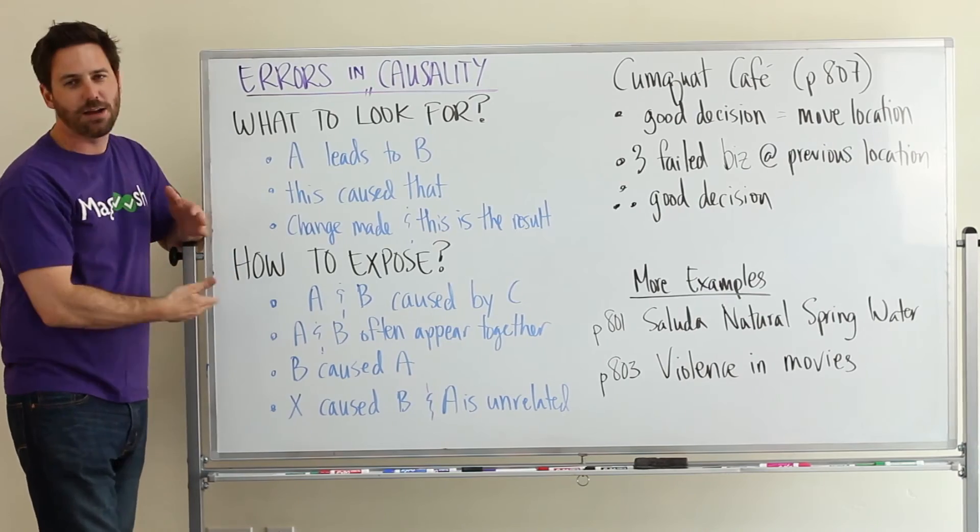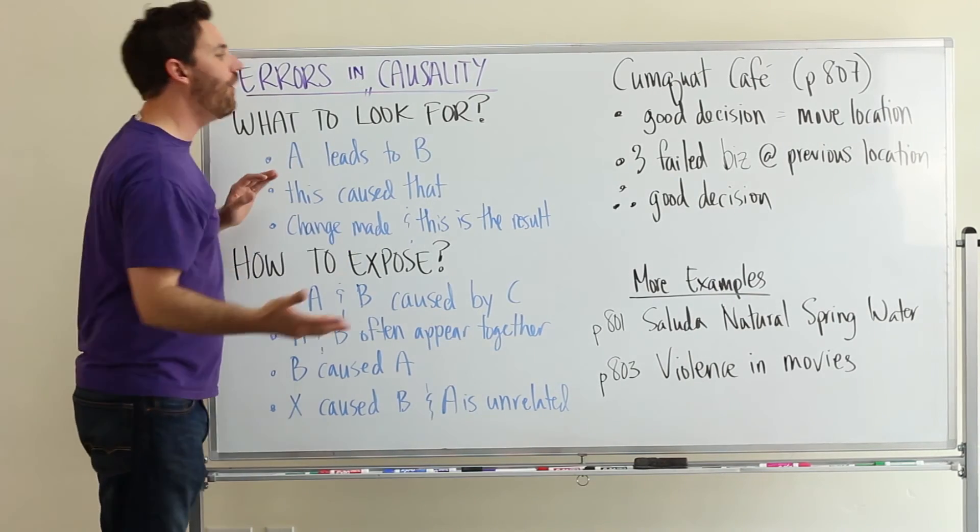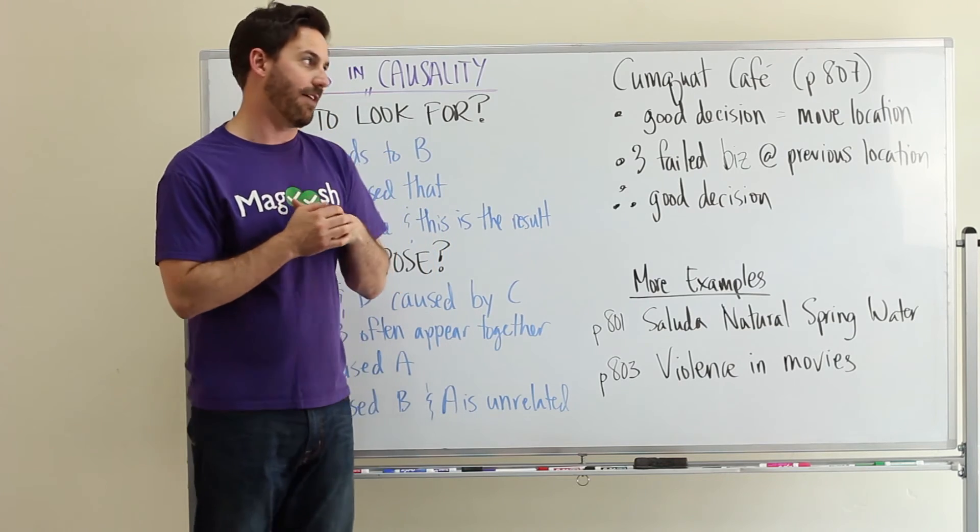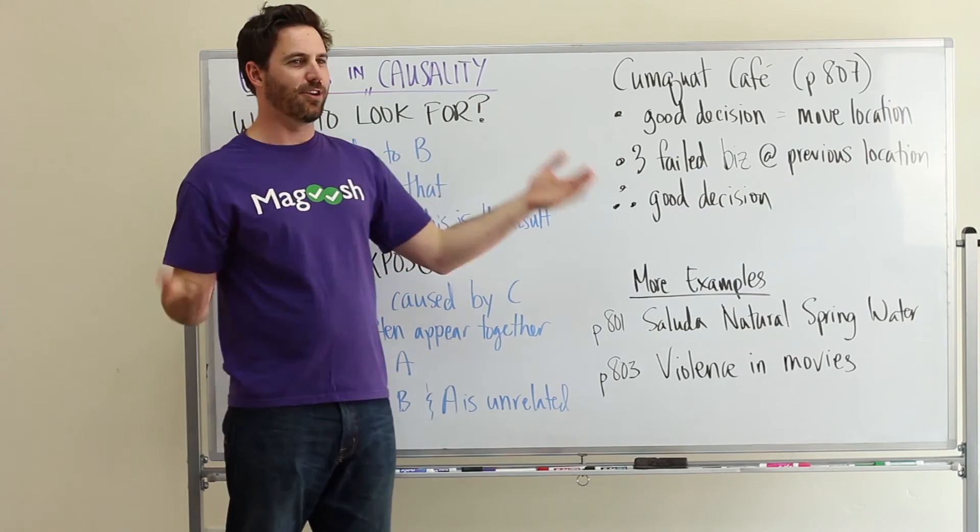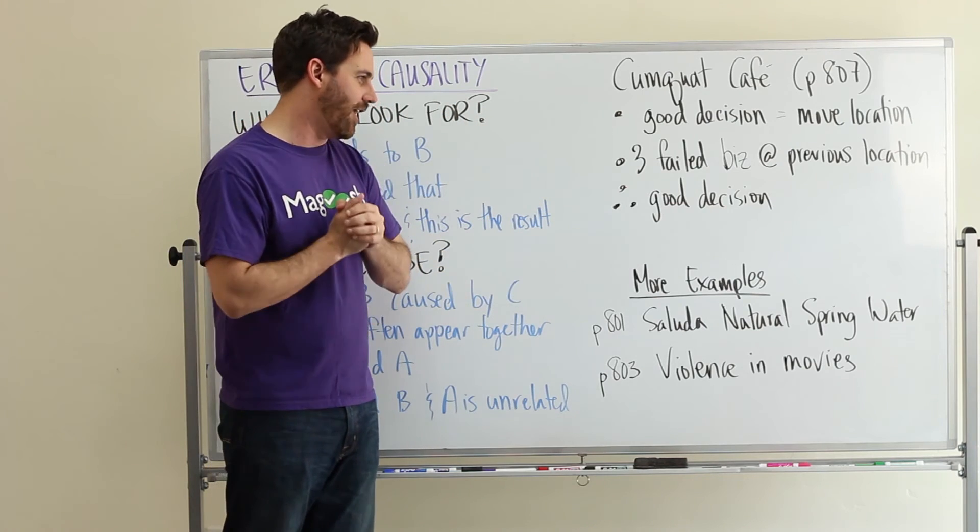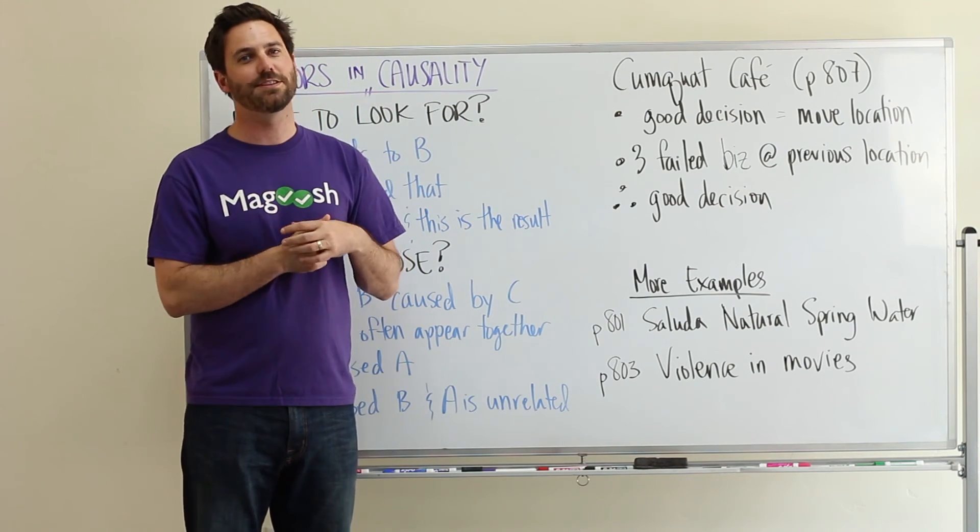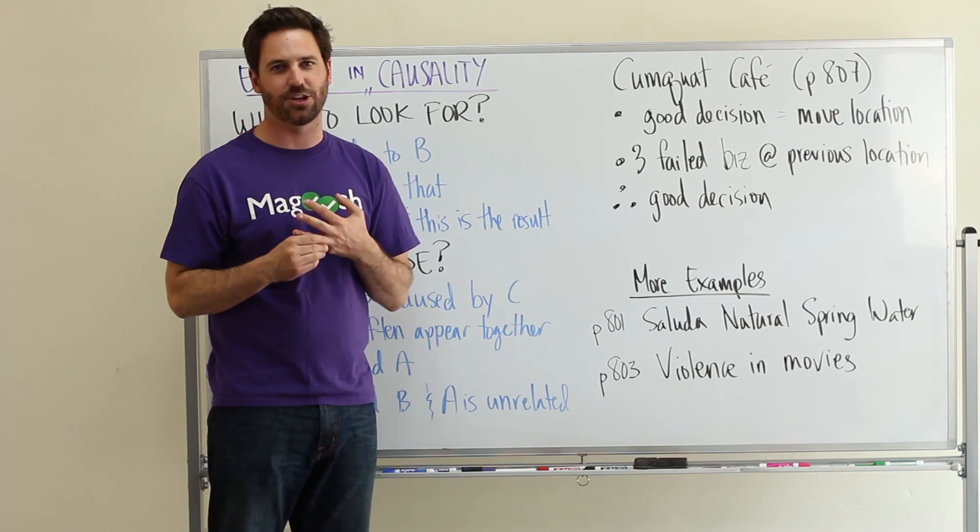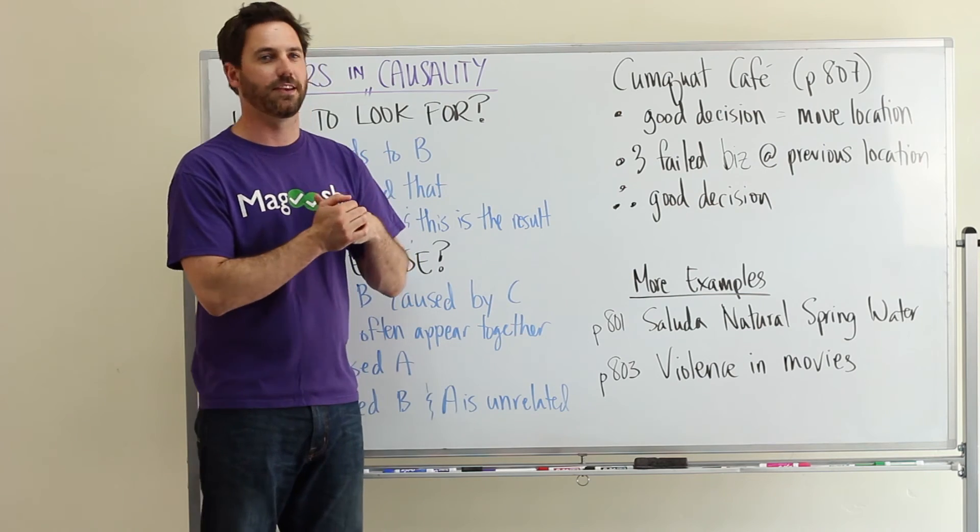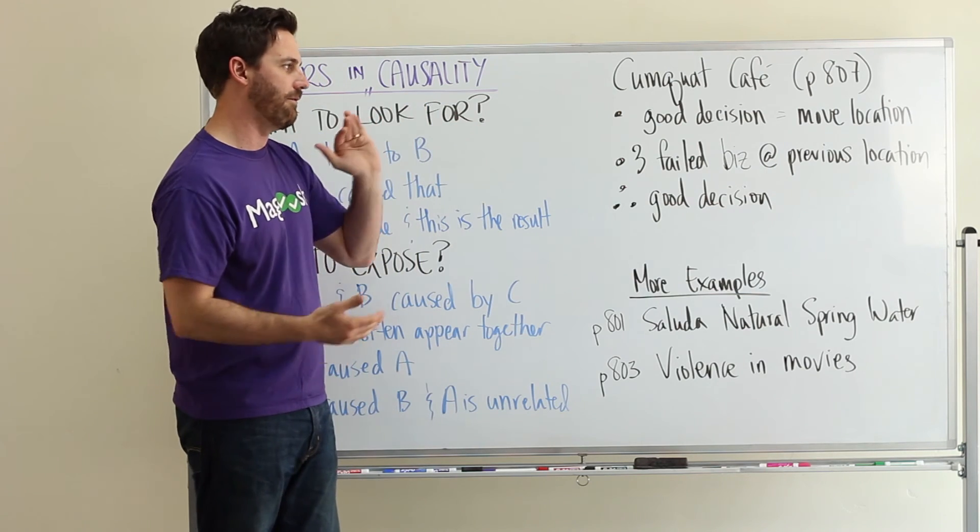So, again, we can talk about how there's all other types of reasons why those businesses might have failed. They could have been poorly run. There might not have been a market for the things that they were selling. Which all doesn't have to do with just the location itself. So writing a paragraph about a couple of those things will be enough to sort of expose that flaw.